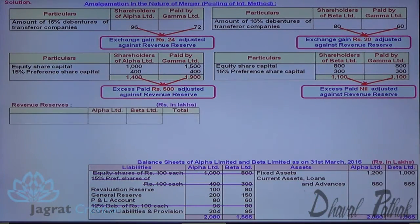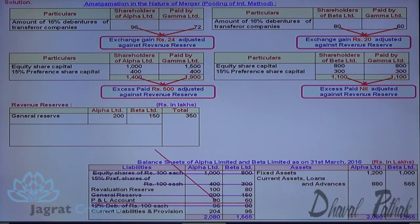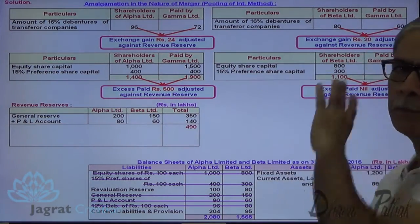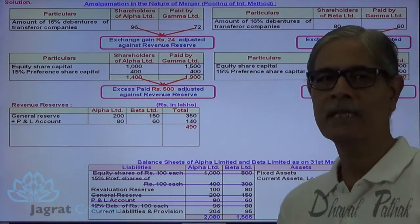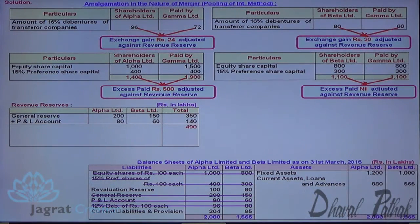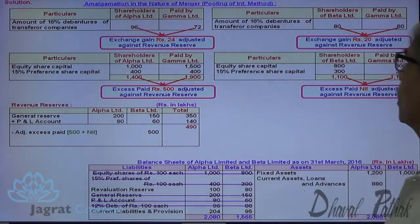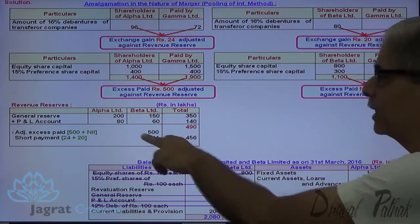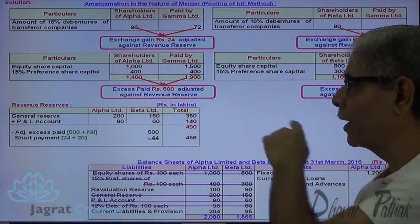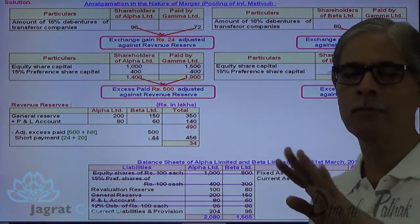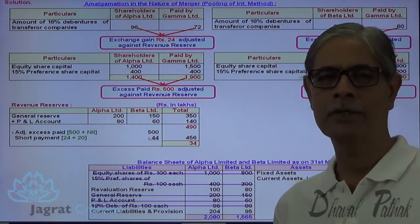Now let me demonstrate the adjustment to revenue reserves. Revenue reserves include general reserve (Alpha and Beta) and profit and loss account (Alpha and Beta). These are the total revenue reserves of the vendor companies acquired by Gamma Limited. At the time of purchase, the excess payment made or the gain in payment has to be adjusted to revenue reserves — that is an important point under pooling of interest method. The excess payment of ₹500 and gain of ₹44 (24 + 20) gives a net excess payment of ₹456, deducted from revenue reserves, leaving revenue reserves of ₹34 lakhs, whose status is maintained in the books of Gamma Limited after amalgamation.